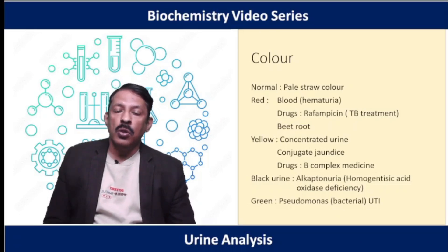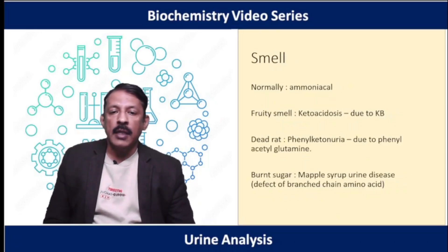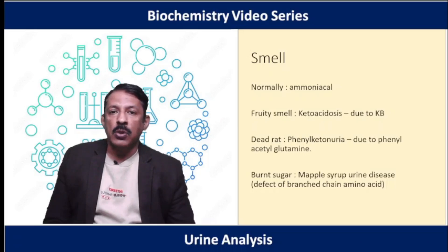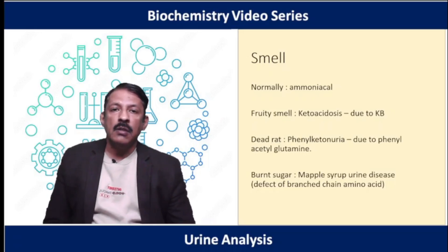The smell of normal urine is ammoniacal. A fruity smell is seen when ketone bodies are present in the urine, as occurs in ketoacidosis — be it diabetic or from starvation. The smell of dead rat is usually associated with phenylketonuria, due to the presence of phenylacetylglutamine.